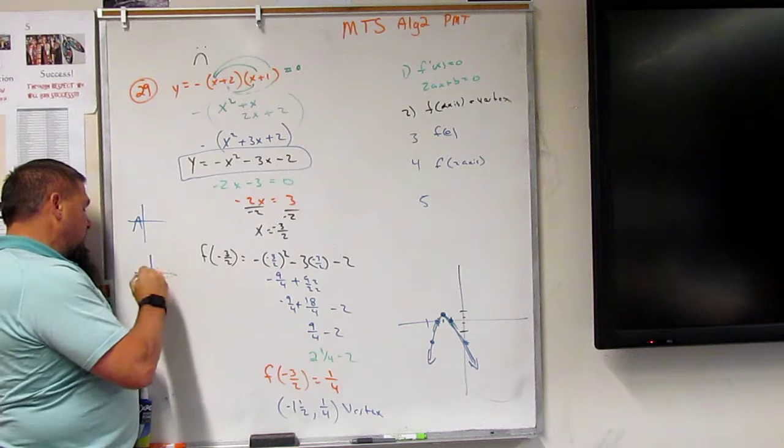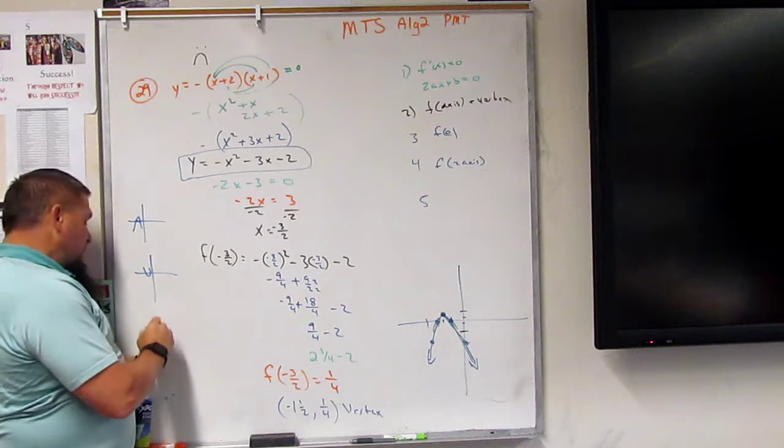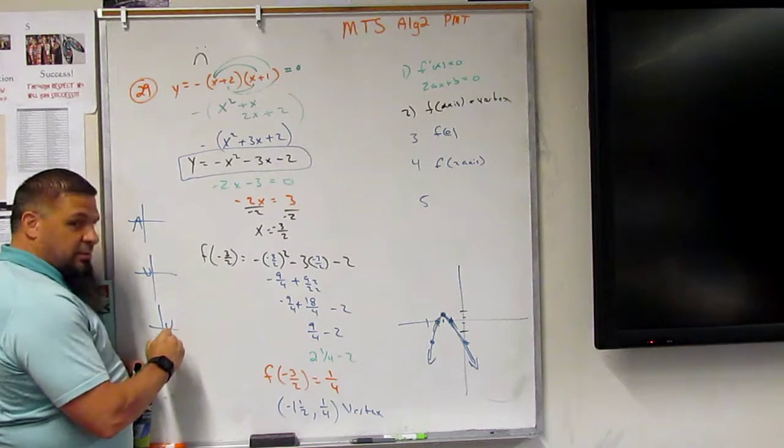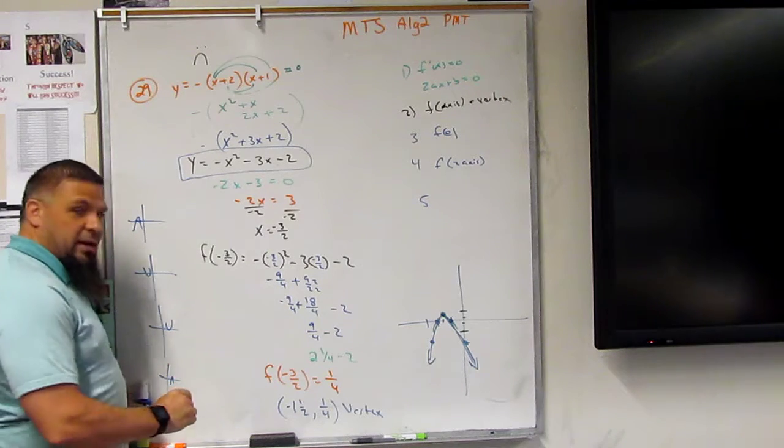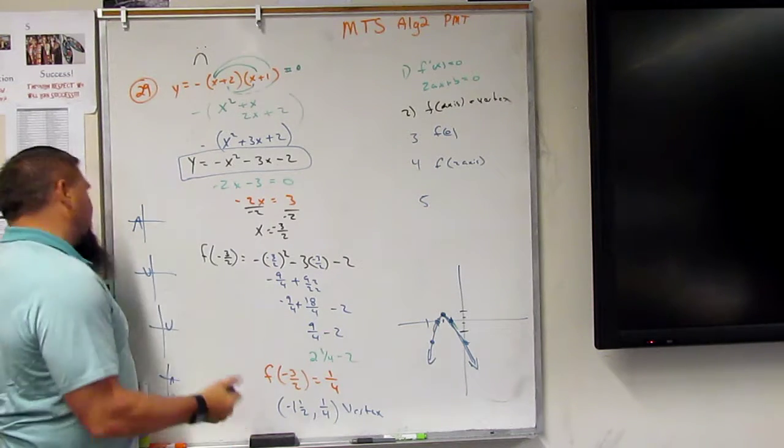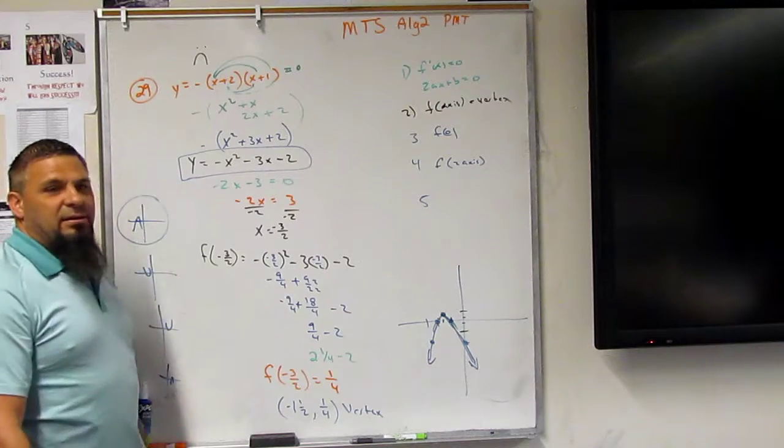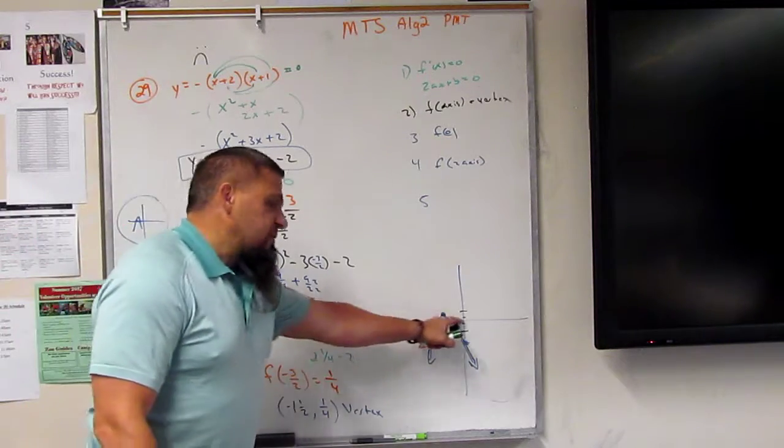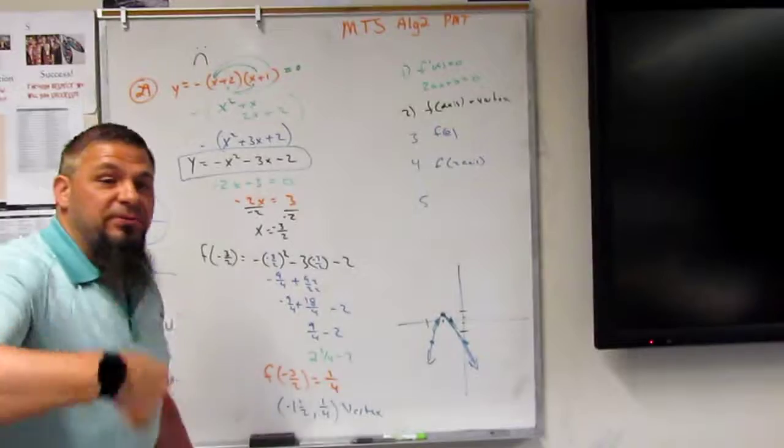Then you could go, oh, I know it has to be A, because I already know those points are going to be A. And that's how you move through a test quickly. You don't have to do all this stuff, right?